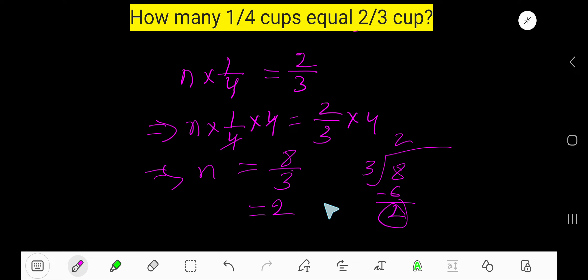This will be the numerator and this will be the denominator. That is two and two thirds. That is how many times one fourth cups: two and two thirds times one fourth cups equals two thirds cup.